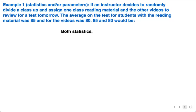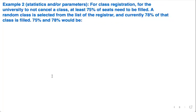One more example: for class registration, for the university to not cancel a class, at least 75% of seats need to be filled. A random class is selected from the registrar, and currently 78% of that class is filled. The 75% is not attached to a sample - it is a generalization for all classes, so therefore 75% is a parameter.